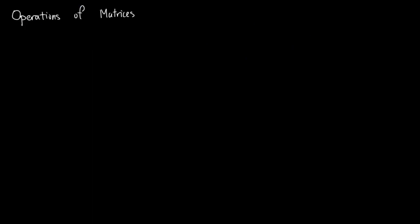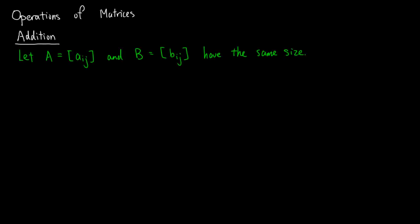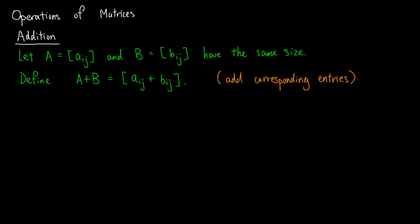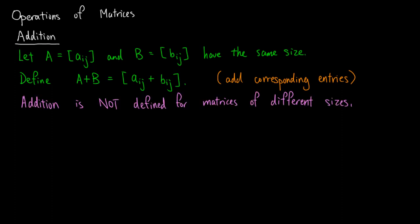Now, we'll talk about operations of matrices. We know that the operations in arithmetic are addition, subtraction, multiplication, and division. So naturally, we'll start with addition of matrices. Let A be the matrix with entries Aij and B with entries Bij have the same size. We define A plus B to be the matrix with entries Aij plus Bij. In other words, to add two matrices, we just need to add their corresponding entries. Note that addition is not defined for matrices of different sizes, mainly because there is no reasonable way to define addition for these matrices.